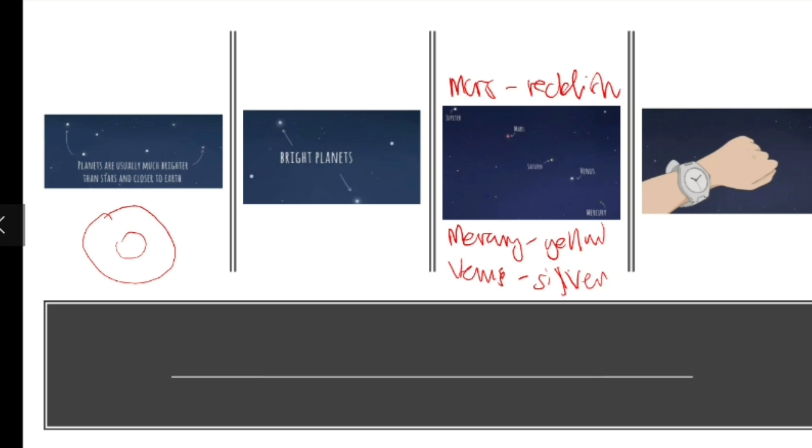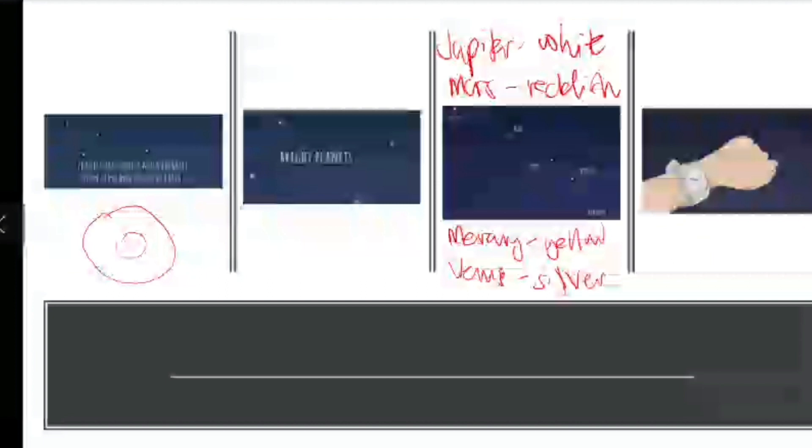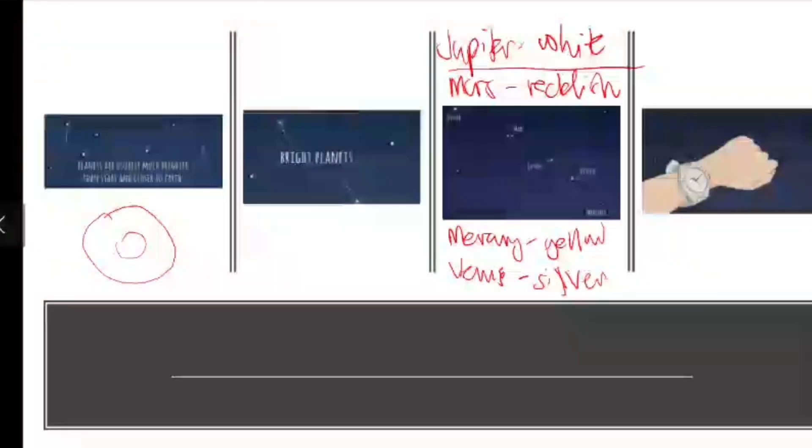For Mercury, it twinkles and flashes a bright yellow color. Venus looks like a UFO - it's often mistaken for an unidentified flying object because it's large and silver in color. Mars is reddish because of iron oxide. Jupiter glows white throughout the night. Actually, it's the second brightest point of light in the night sky. Saturn is the smallest, yellowish white in color.